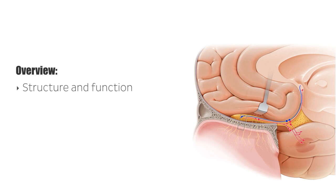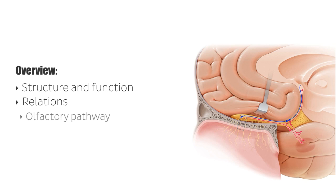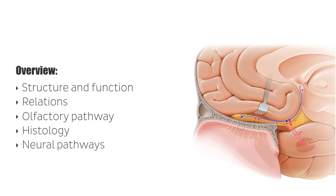First we'll cover the structure and function of the olfactory nerve, then we'll move on to look at some important relations of this nerve. Once we're competent in these areas, we'll systematically work our way through the gross anatomy of the olfactory pathway, followed by the histology of the olfactory mucosa. We'll also look at the neural pathways involved in the perception of smell. Finally, we'll conclude this tutorial with some clinical notes relating to the olfactory nerve and its pathway.